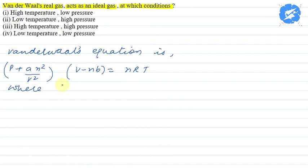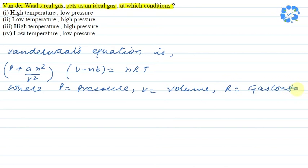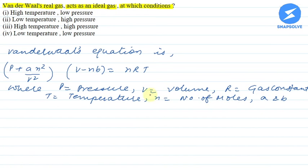Where p is pressure, v is volume, r is gas constant, t is temperature, and n is number of moles. And a and b are Van der Waals constants.